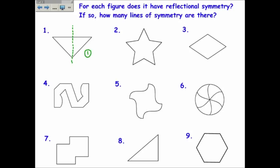Number two is the star. It's really easy to see one line of symmetry, but there are a few more. Because the star is symmetric, it also has this line — I could reflect it across that line and get the exact same picture. This one would also work, and through these points as well. So counting them up: one, two, three, four, five — there are five lines of symmetry for the star.